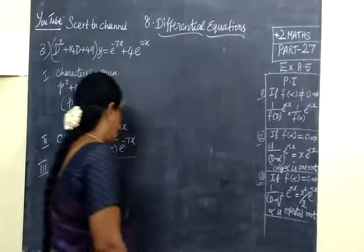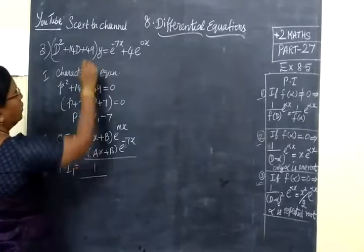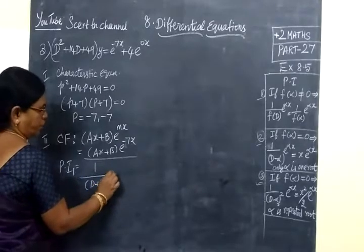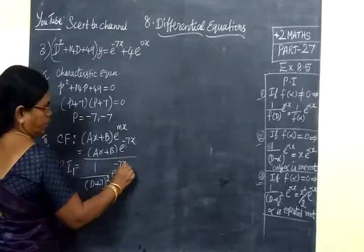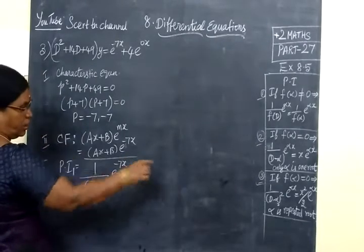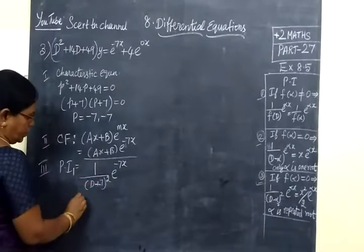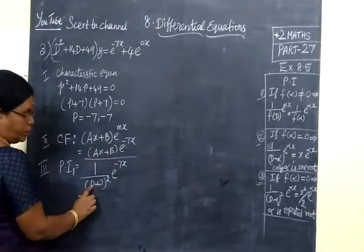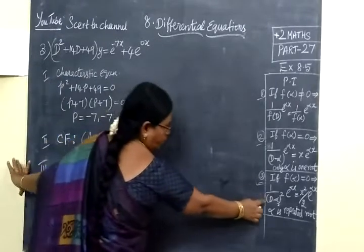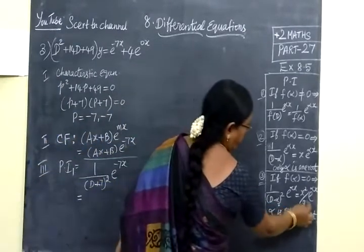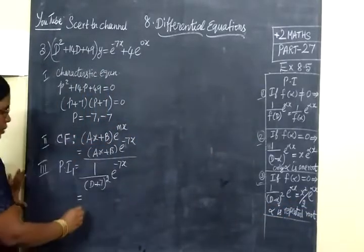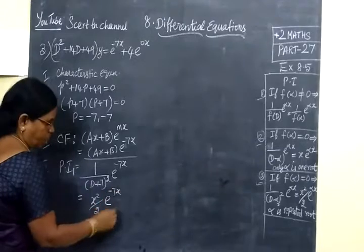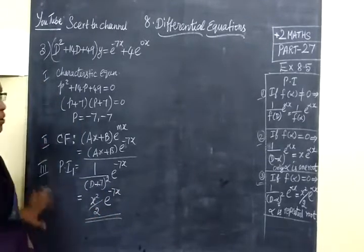So PI1 = 1/(D + 7)² acting on e^(-7x). This equals, by the third condition, (x²/2)e^(-7x). This is the particular integral 1.